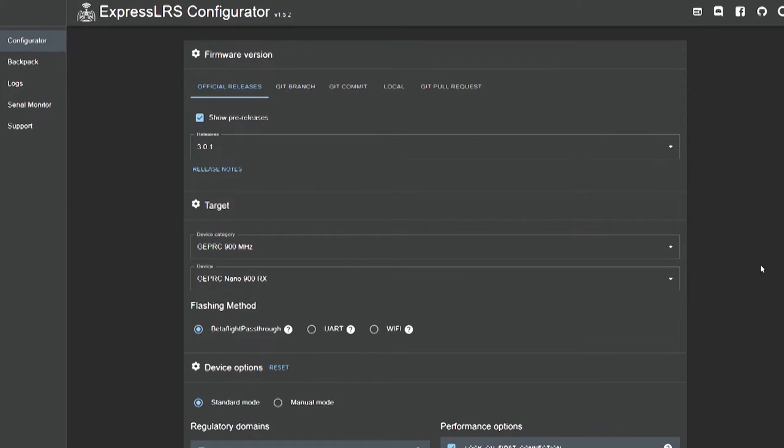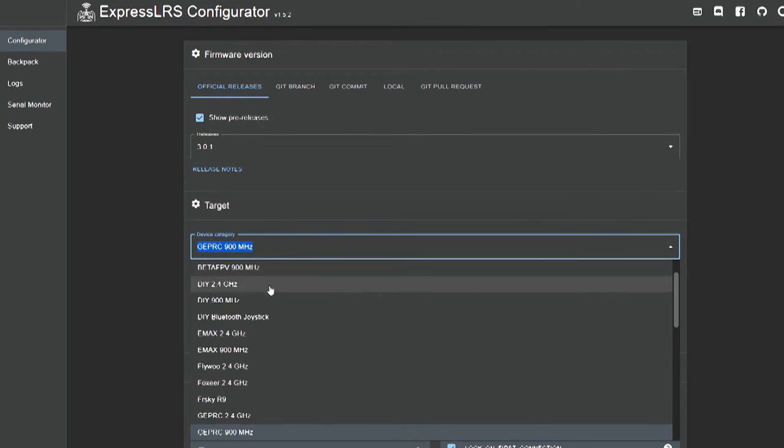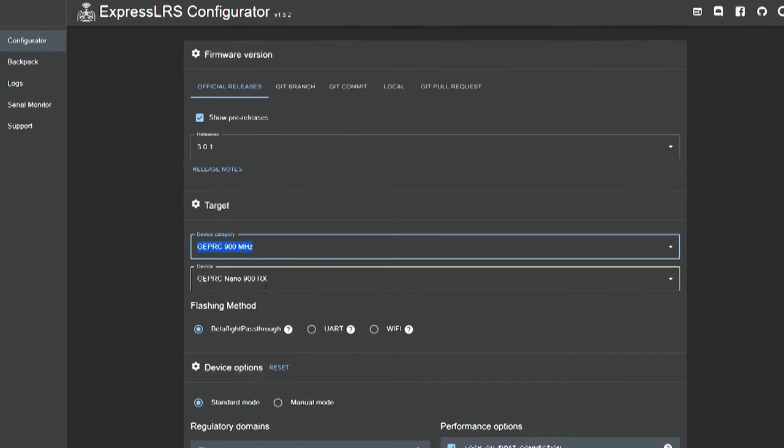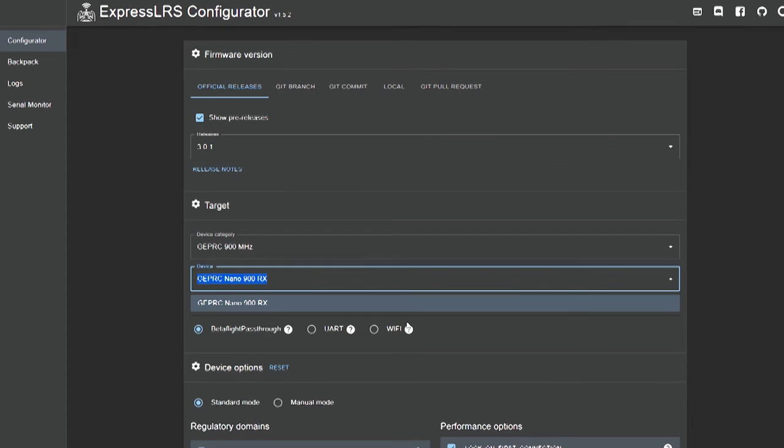So connect the flight controller to your PC and open ExpressLRS configurator. When flashing the firmware to the receiver select the receiver in the drop down tab. And your first flash with it you need to select betaflight passthrough.